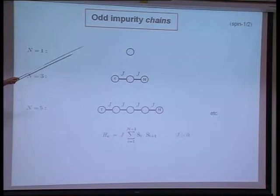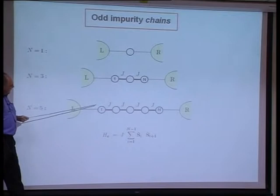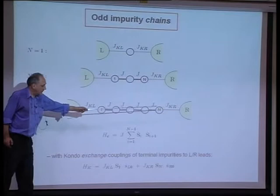But let me focus on the odd impurity chains. One has spin-one-half impurity chains of length N, antiferromagnetically coupled, where N is one, three, five, seven. These are antiferromagnetically coupled by an exchange coupling J, and then the N members are themselves Kondo-coupled to two equivalent non-interacting metallic leads.